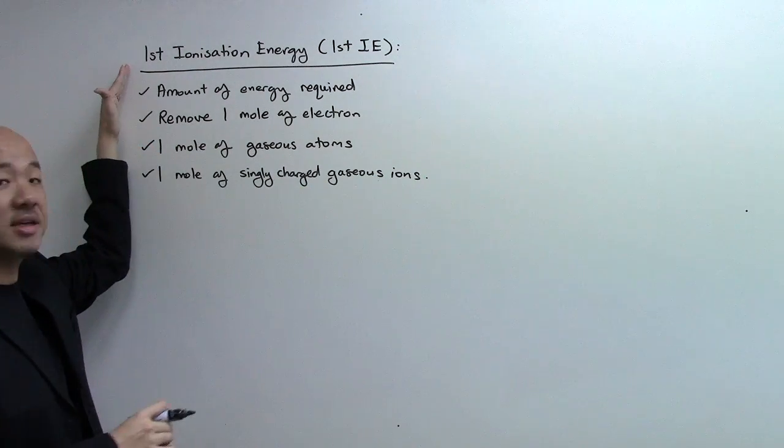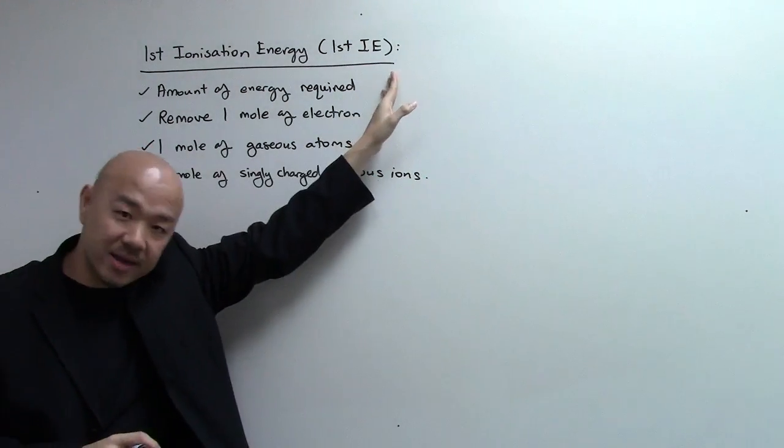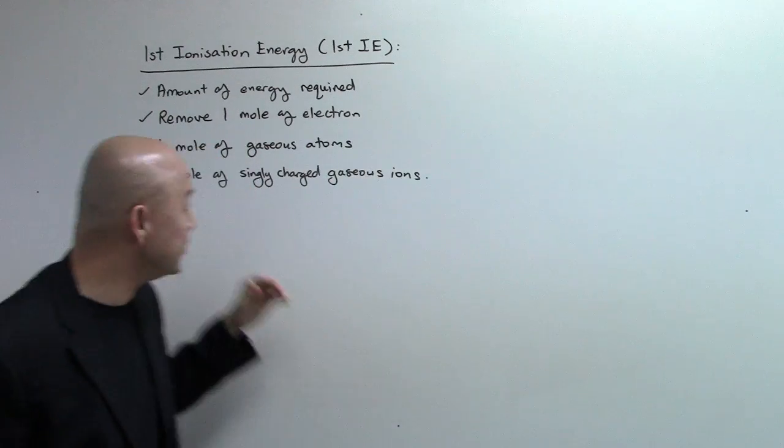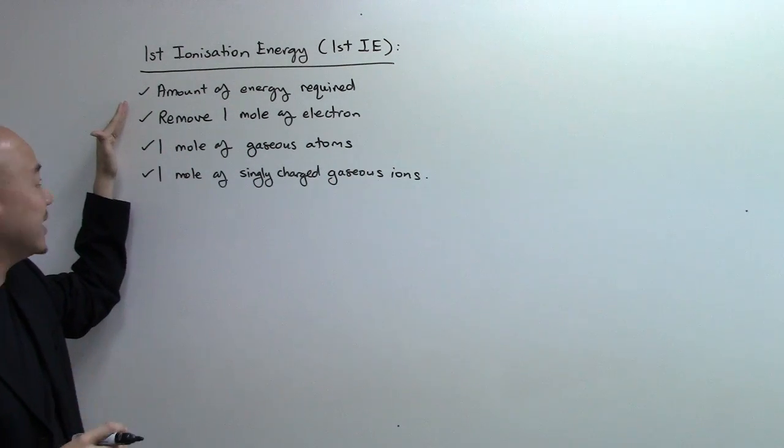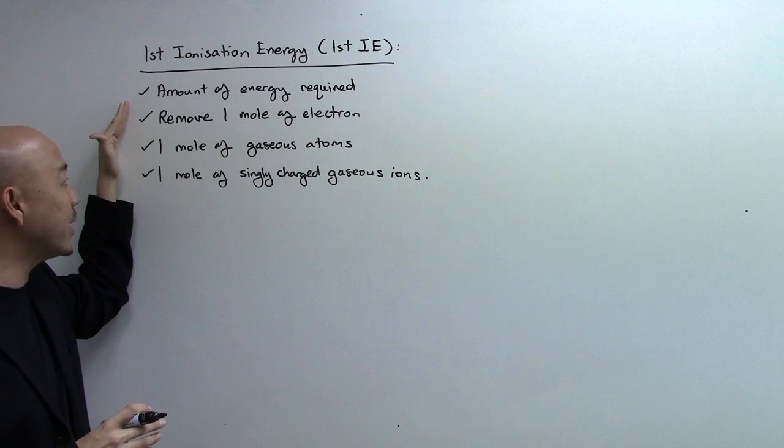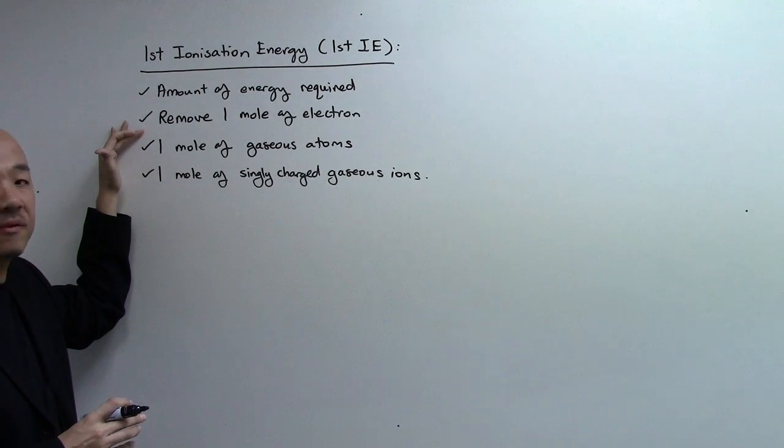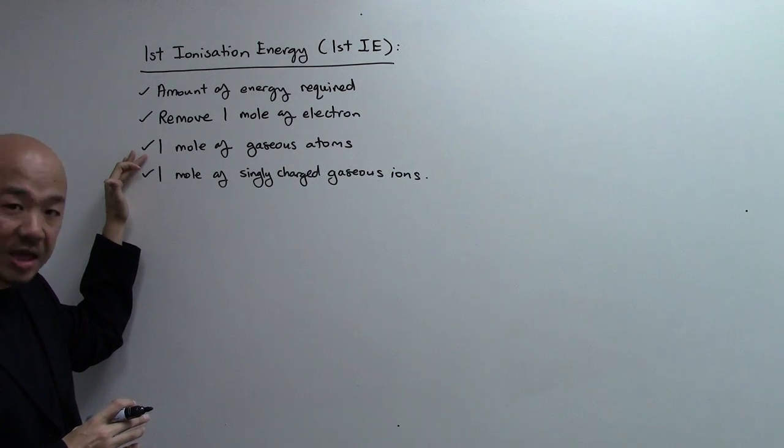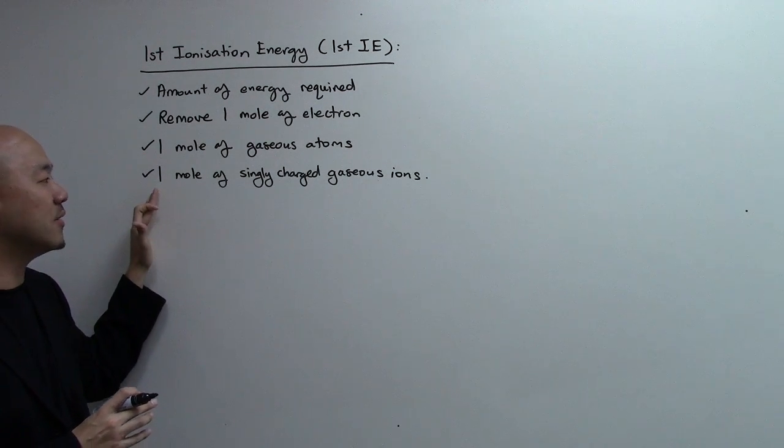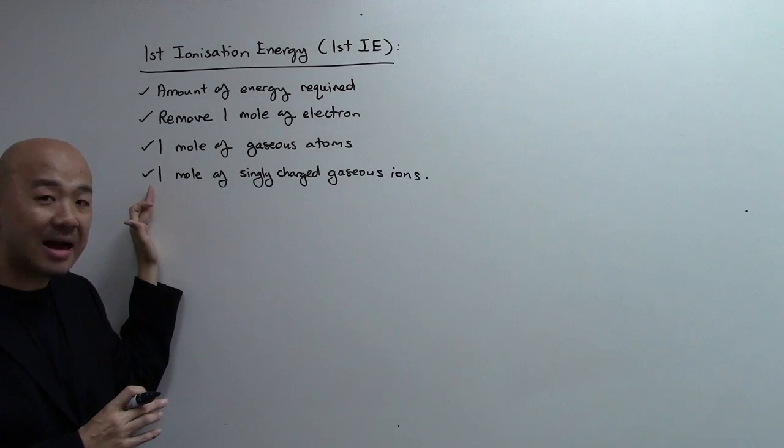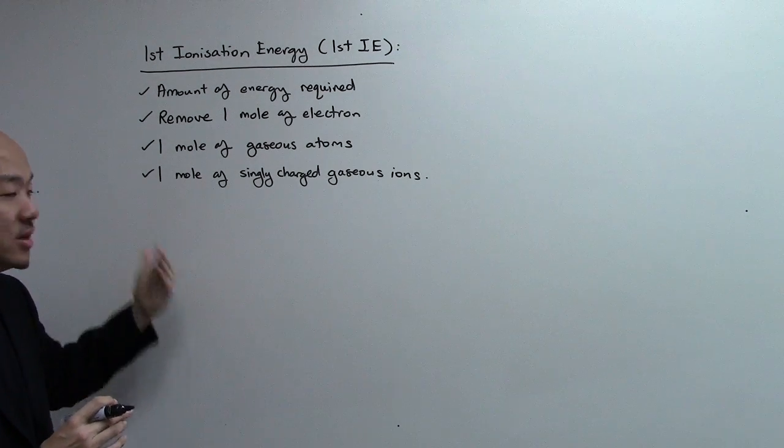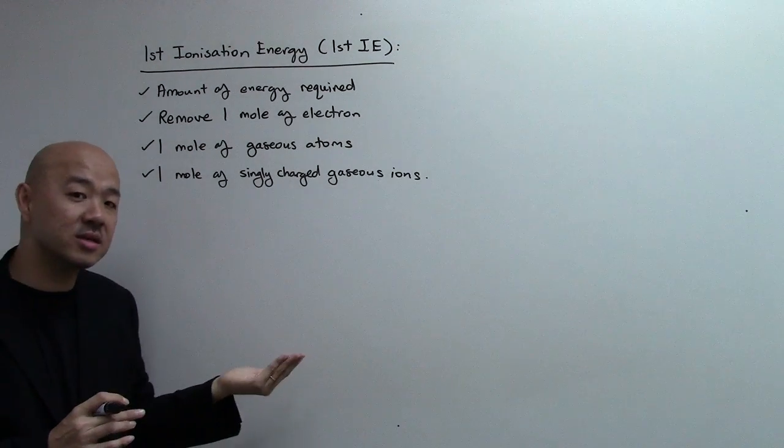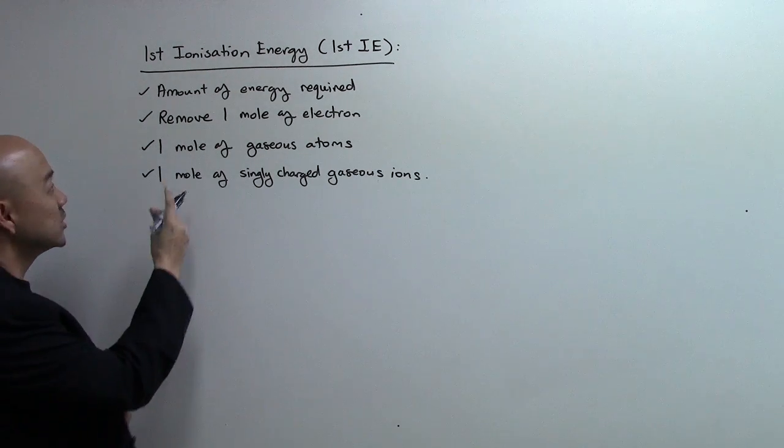Now, first ionization energy—in short we tend to write first IE, especially in the exam we don't have a lot of time—is formally defined as the amount of energy required to remove one mole of electrons from one mole of gaseous atoms.